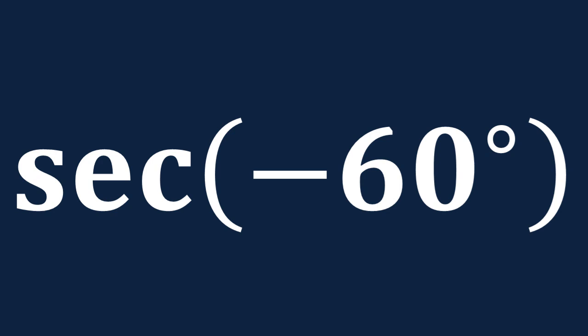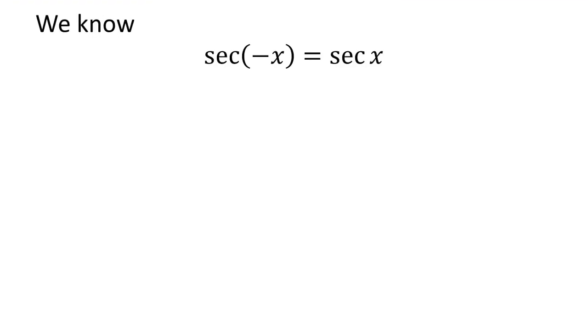In this video, we will learn to find the value of secant of minus 60 degrees. As we know, the trigonometry identity secant of minus x is equal to secant of x. The video explaining how to derive this identity is appearing in the upper right corner, and the URL address of the video has been mentioned in the description section.